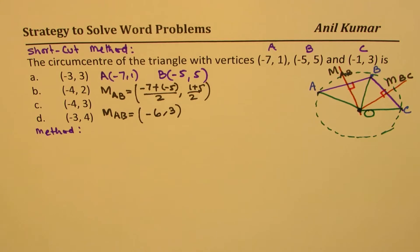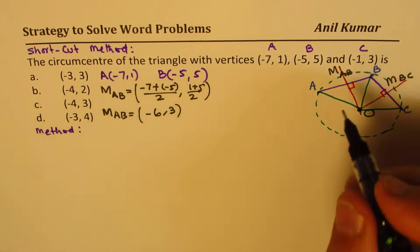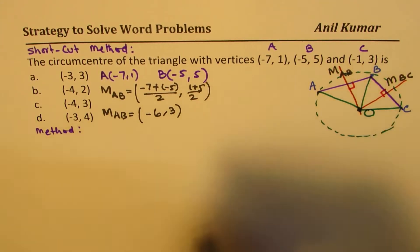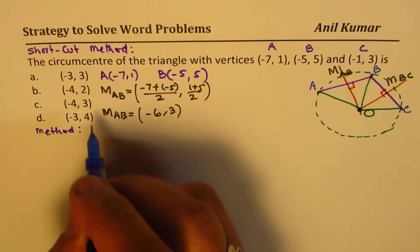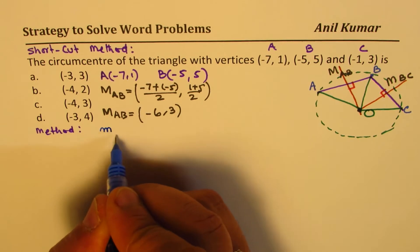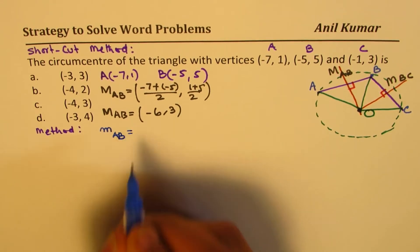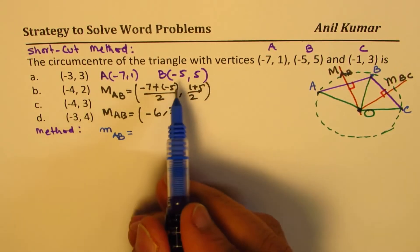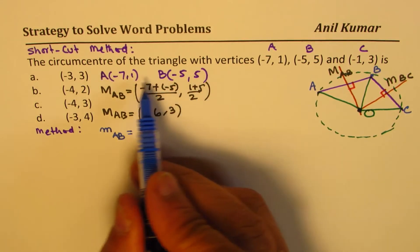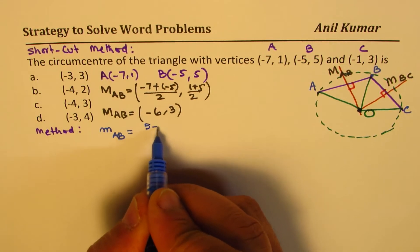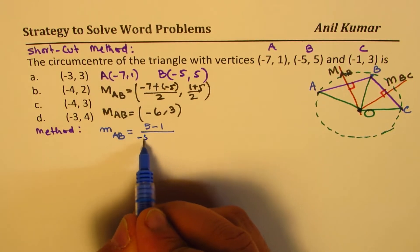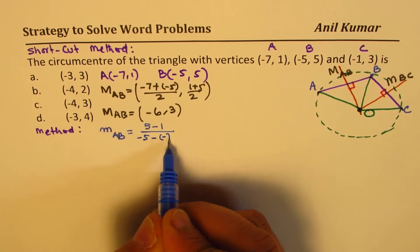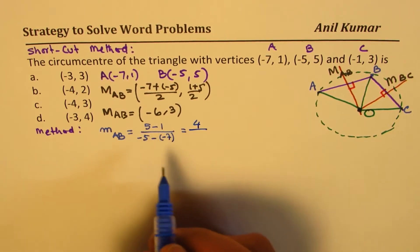Now, second step is to find the slope. Perpendicular will be negative reciprocal slope. So let's find the slope now. So we say slope, lowercase m, I am writing for slope of AB will be y2 minus y1. So 5 minus 1 divided by x2 minus x1, -5 minus -7.